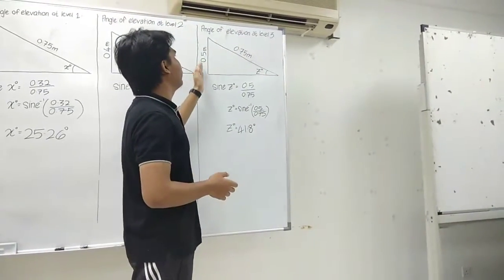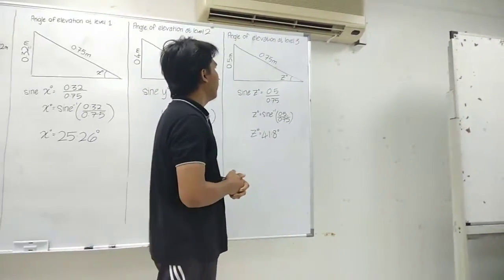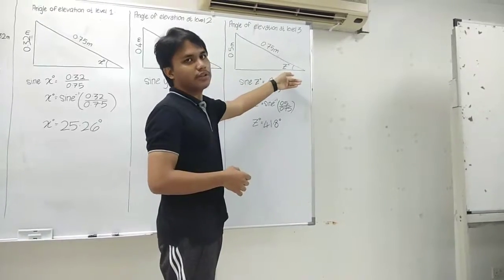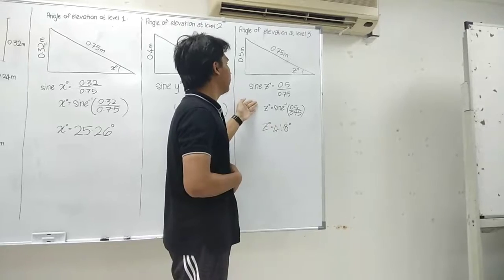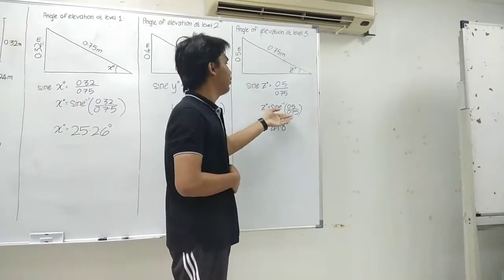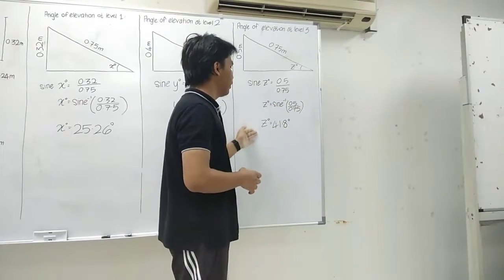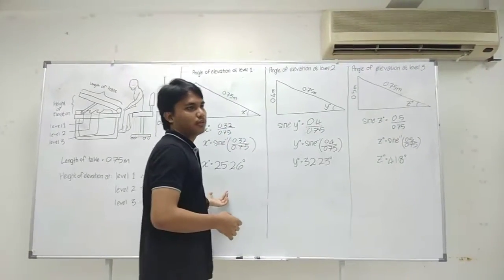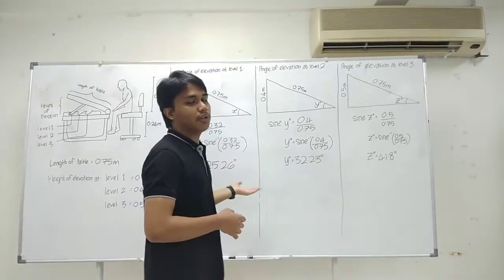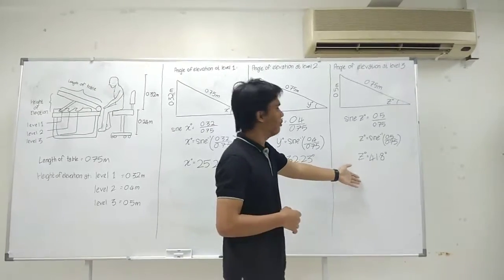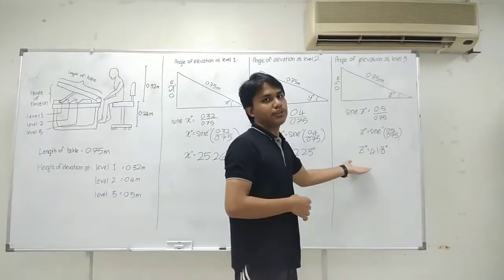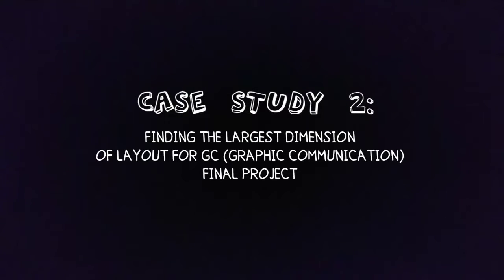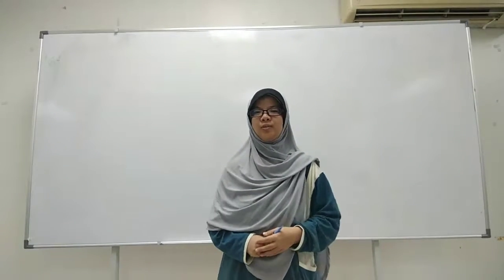For the angle of elevation at level 3, the height of the table is 0.5 meters and the length is still 0.75 meters. Using sine: sine(z) equals 0.5 over 0.75. Taking the inverse sine of 0.5 over 0.75, the answer is 41.8 degrees. Between all these answers, the best angle of elevation for the table is at level 3 because 41.8 degrees falls between 40 and 50 degrees.